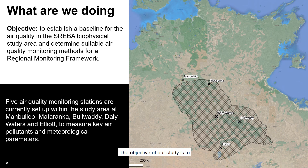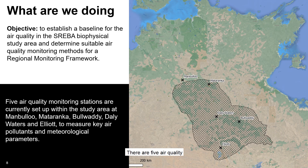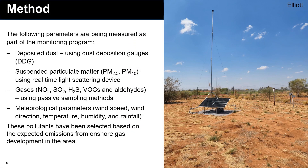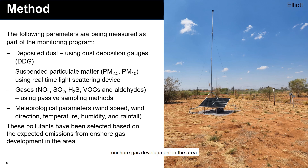The objective of our study is to establish a baseline for the air quality in the SHRIBA biophysical study area and determine suitable air quality monitoring methods for a regional monitoring framework. There are five air quality monitoring stations currently set up across the study area in locations with potential human health impacts, as shown in this figure. At each of the monitoring stations, deposited dust, suspended particulate matter, gases and meteorological parameters are being monitored. These pollutants have been selected based on the expected emissions from onshore gas development in the area.